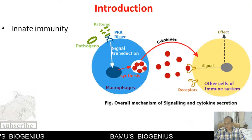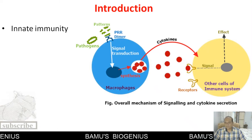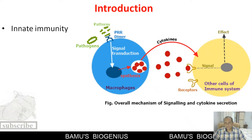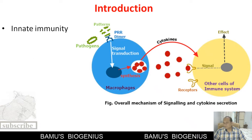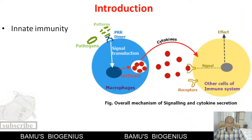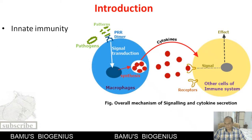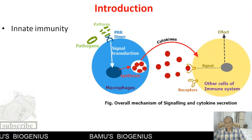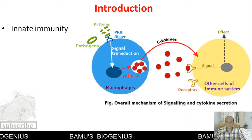These transcription factors bind to specific genes responsible for synthesis of proteins called cytokines. When these cytokines are secreted outside the cells of the immune system, they stimulate other immune cells, and the effect of those cytokines is amplified, leading to inflammation. These patterns are responsible for instigating and stimulating the cells of the immune system.